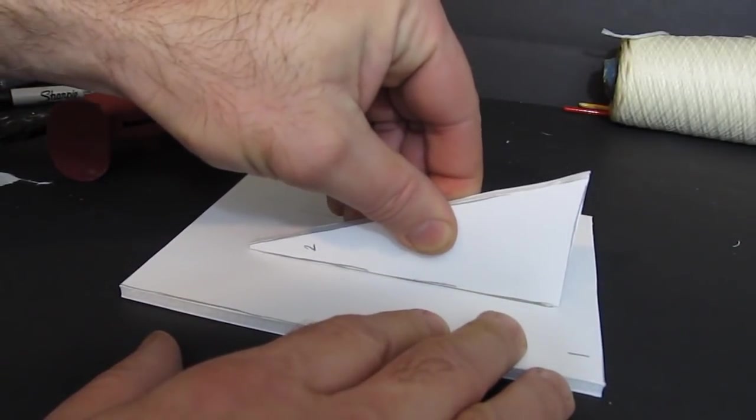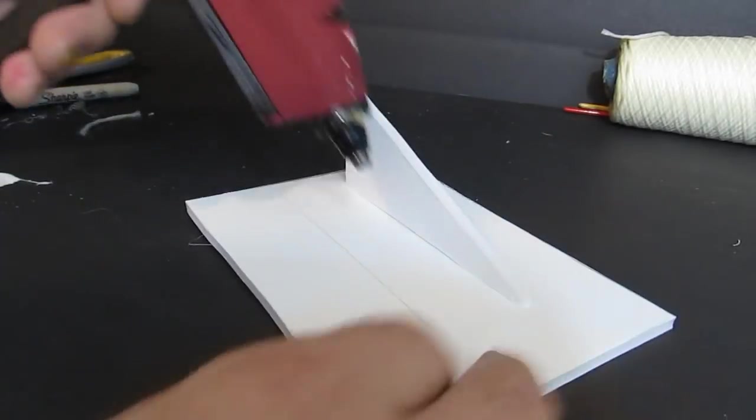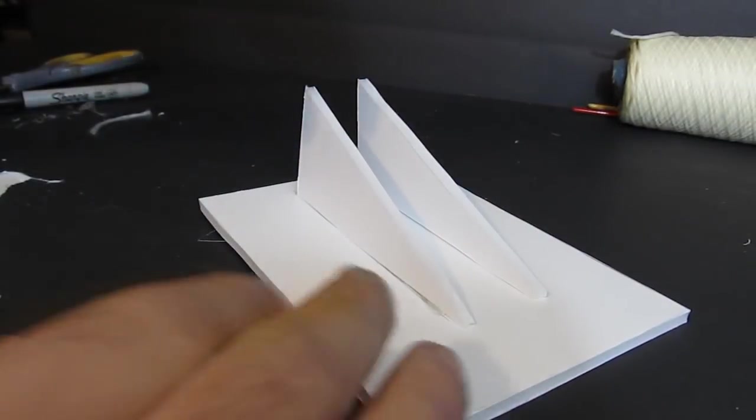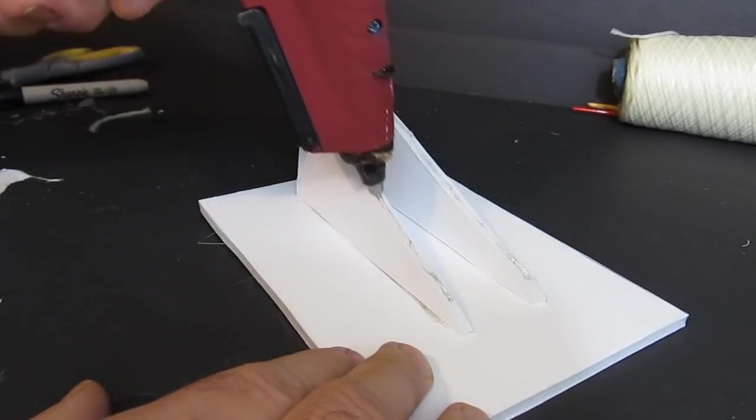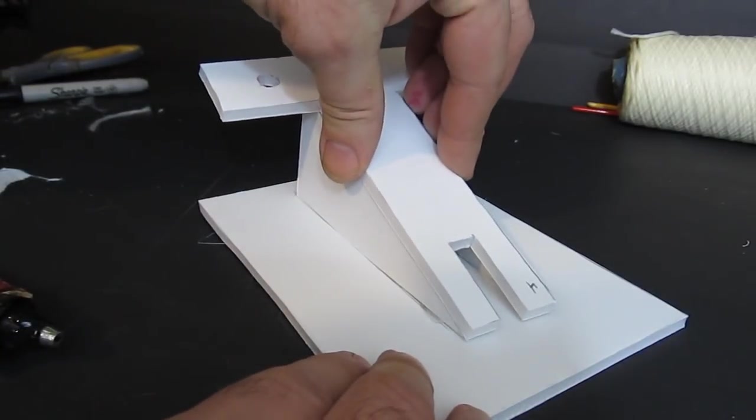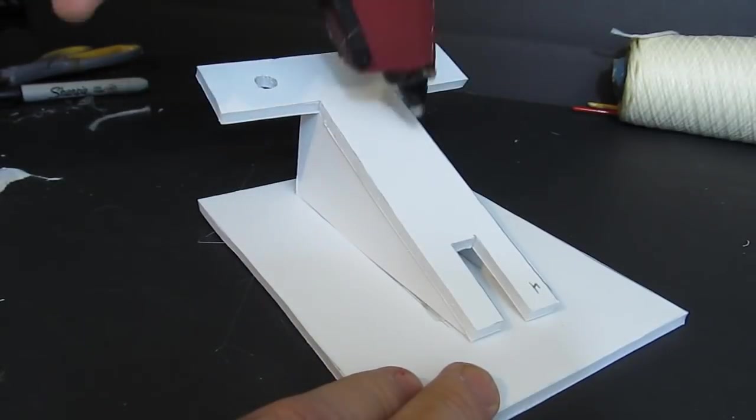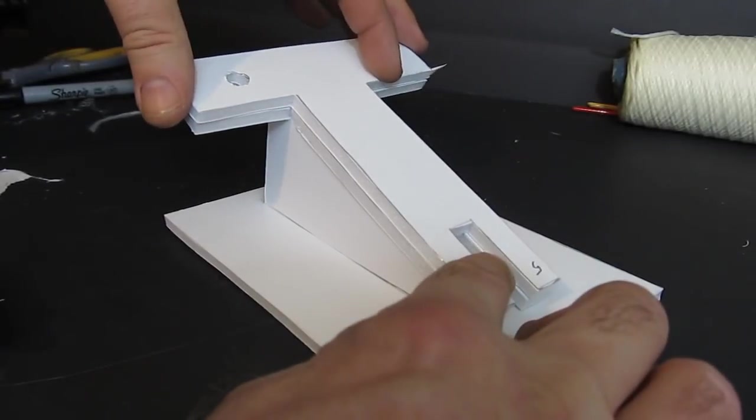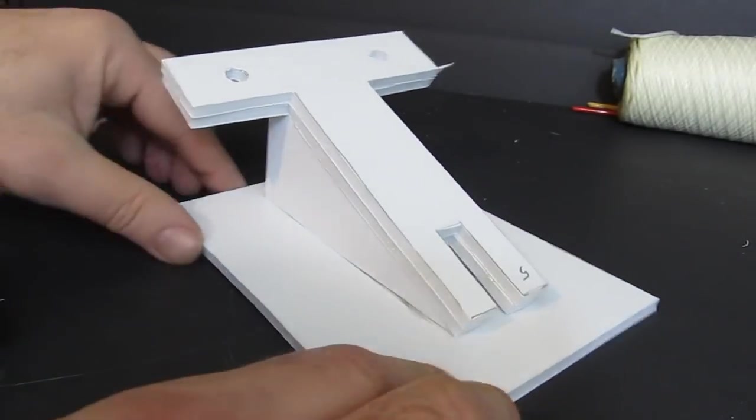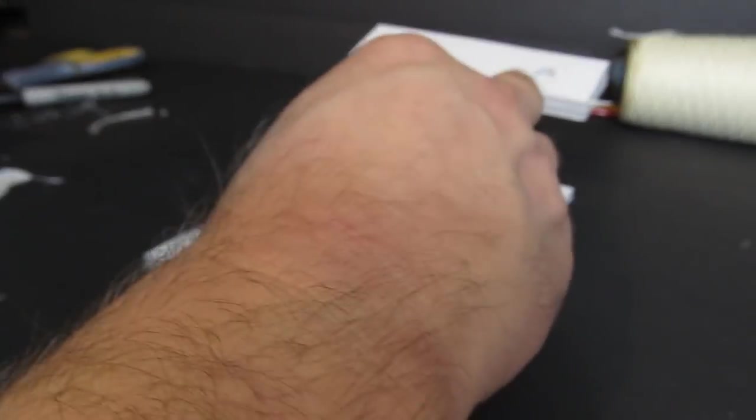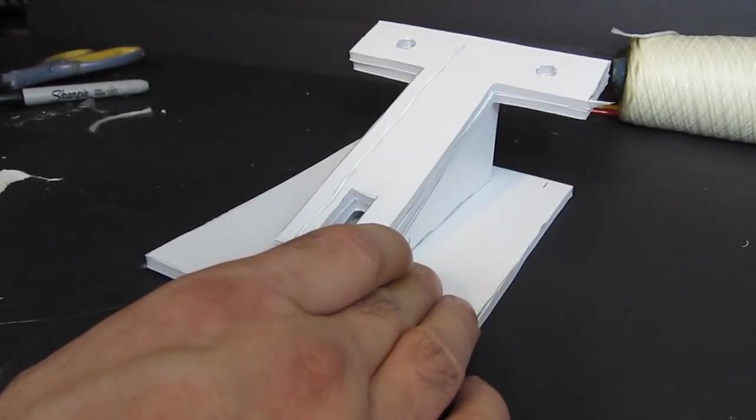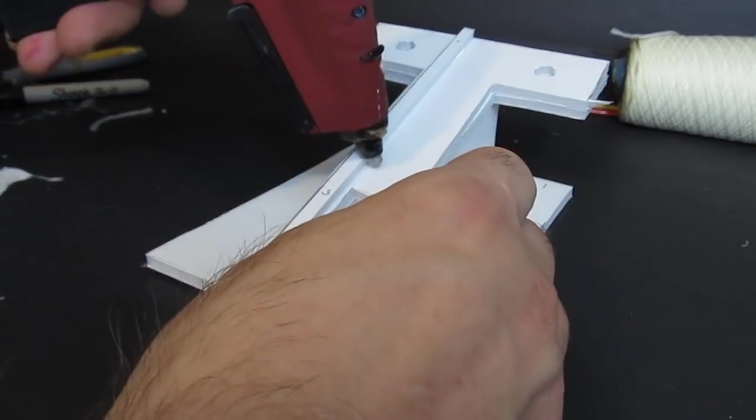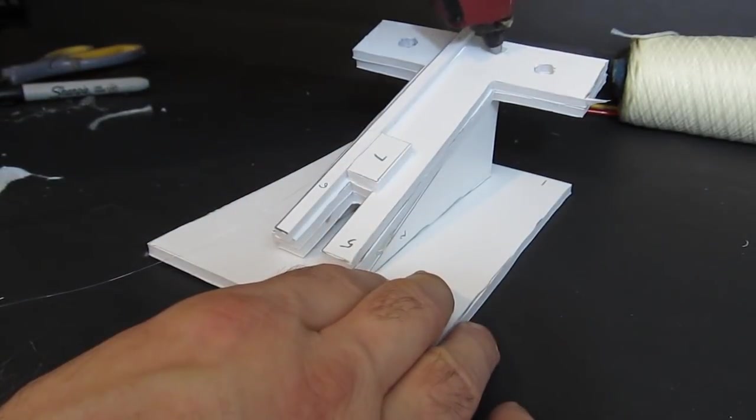Part one is the base. You add part two, part three, part four, five. Now the runway for the bolt is six, seven, and eight.